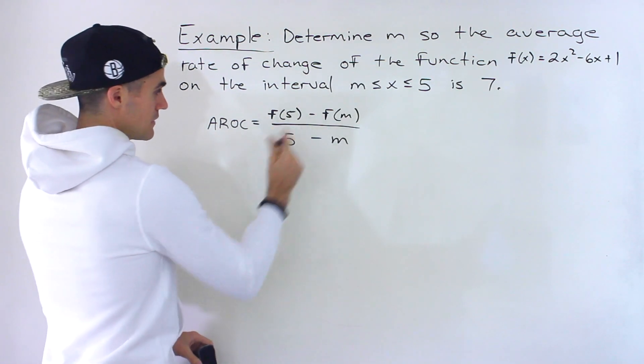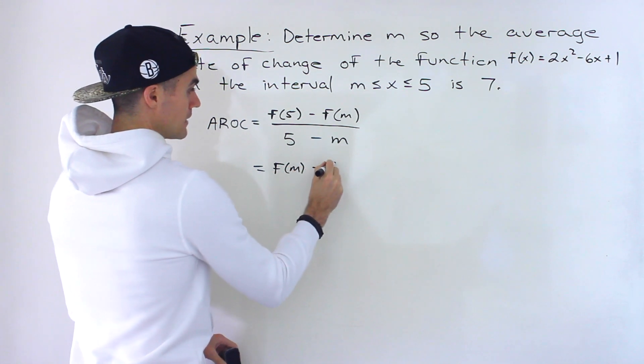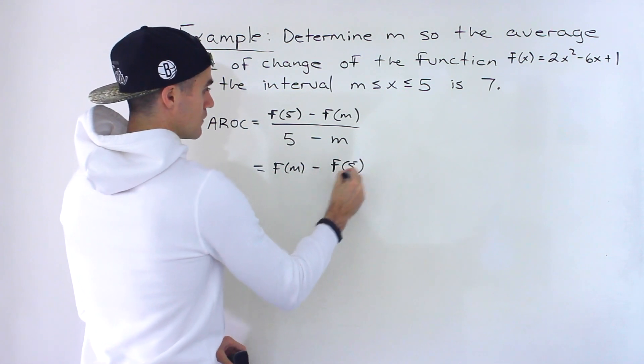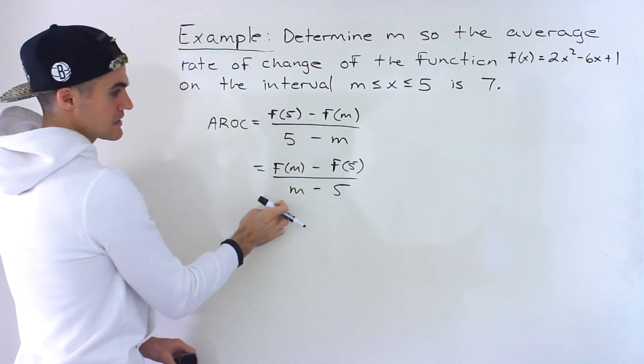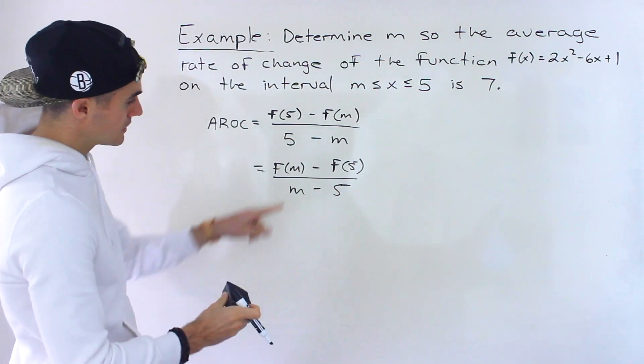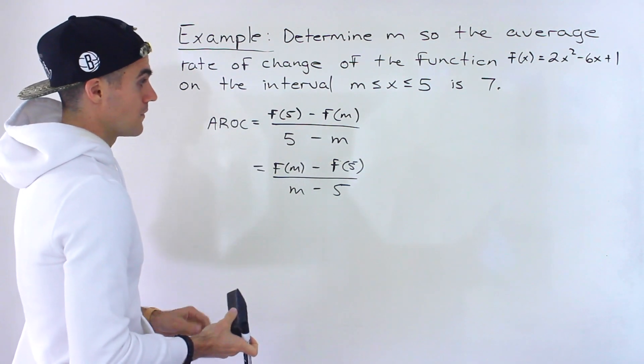Now it doesn't necessarily have to be in this order, another way you could do it, you could do f(m) - f(5) all over m - 5, right? This and this are the exact same thing. As long as these two are lined up, then you can do it in whichever order you want.